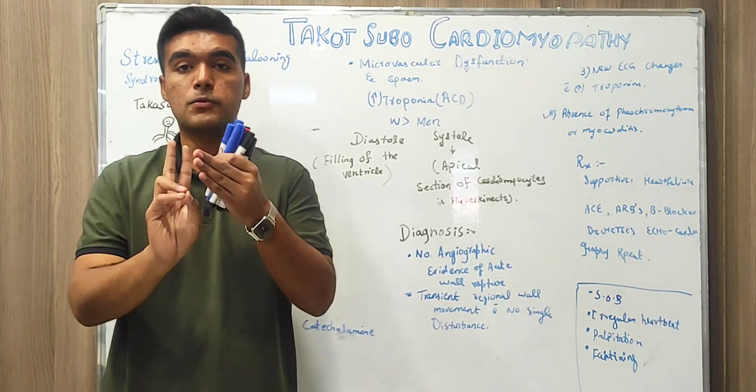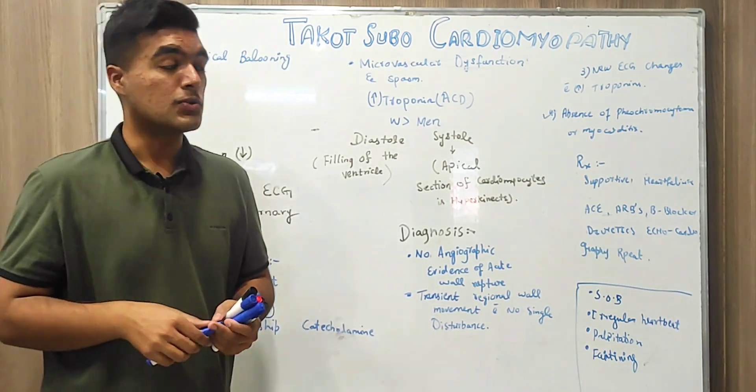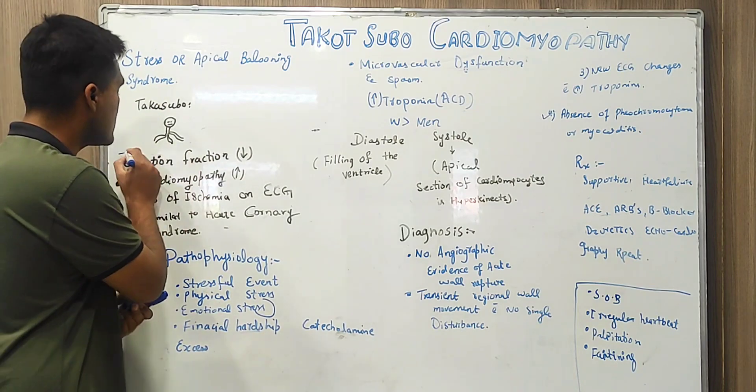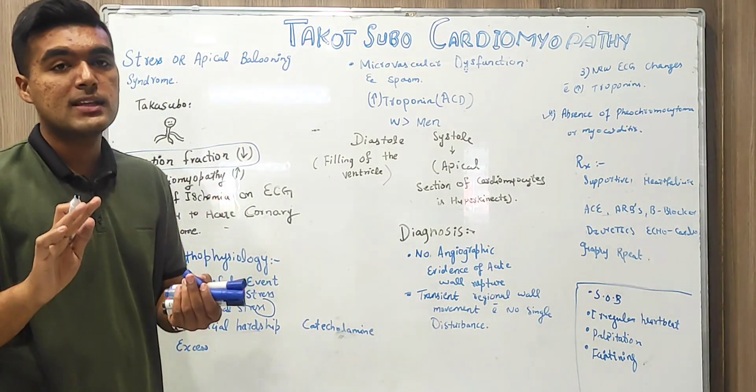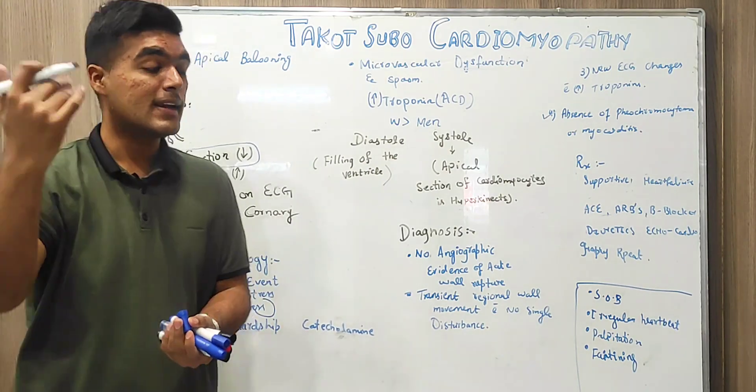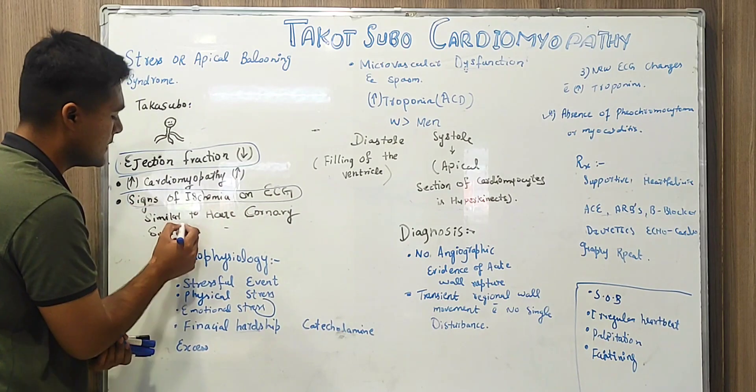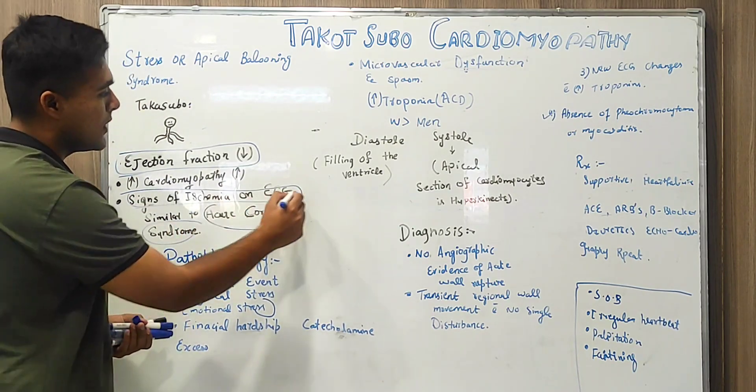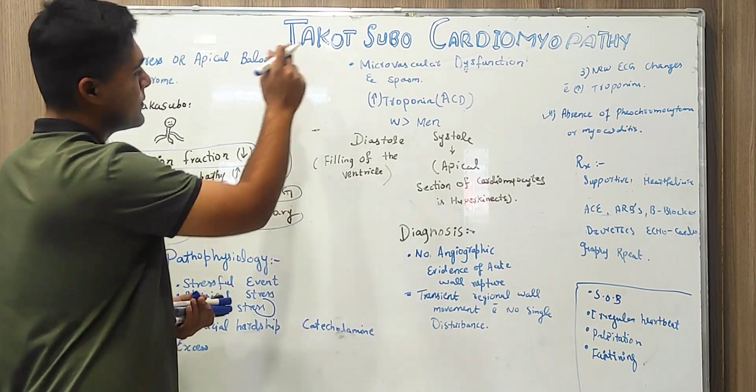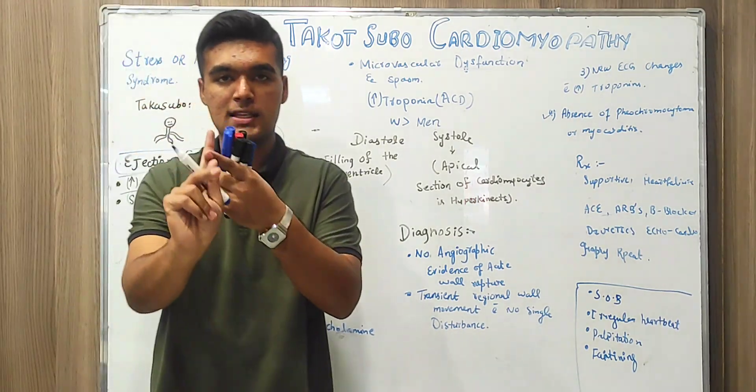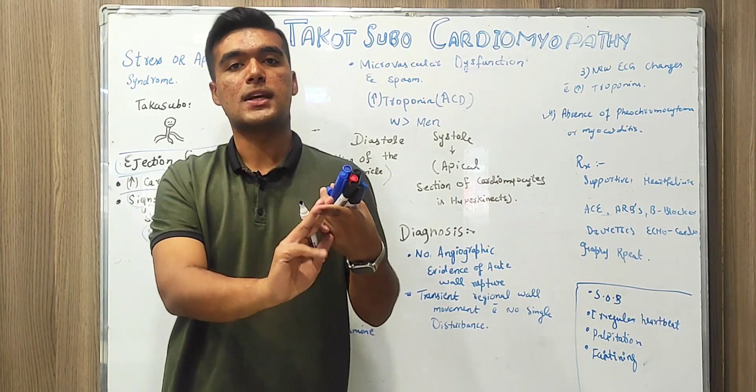We have two main forms of identification. First is ejection fraction, it is reduced. Ejection fraction is the pumping ability of the heart that is reduced. Cardiomyopathy, it is increased as well as ECG findings showing signs of ischemia on ECG which is similar to acute coronary syndrome. So our first major point in diagnosis of Takotsubo Cardiomyopathy: see ejection fraction, see cardiomyocyte damage, see ischemia signs on ECG.